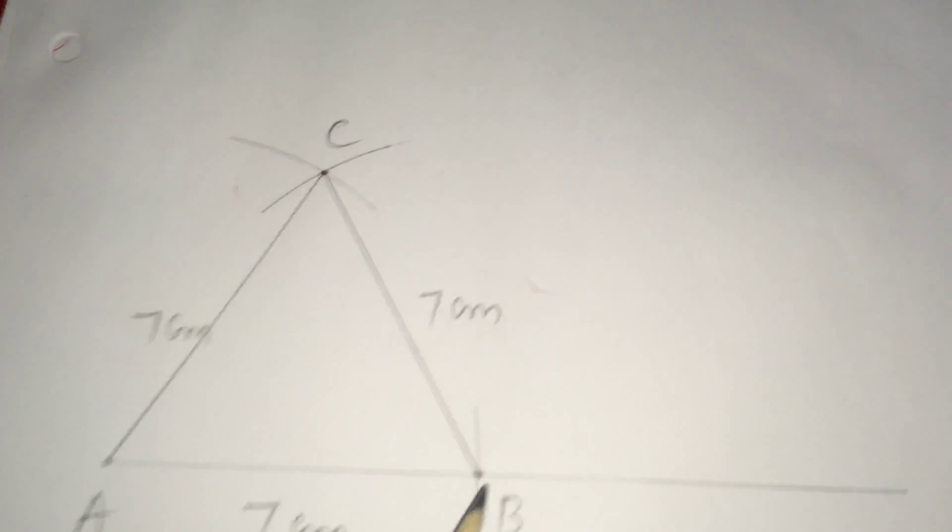I am taking radius of 7 cm using this set of compasses. This is 7 cm. With A at center,